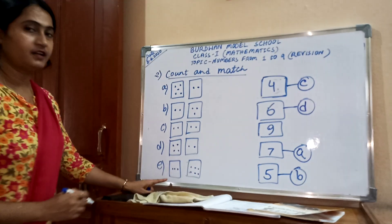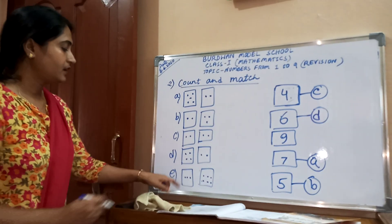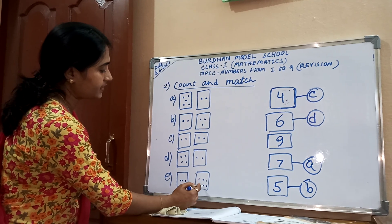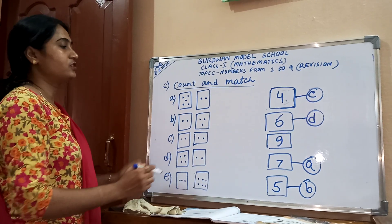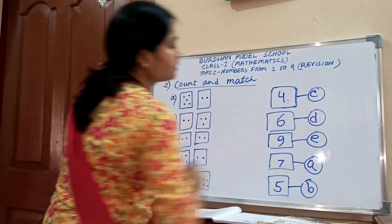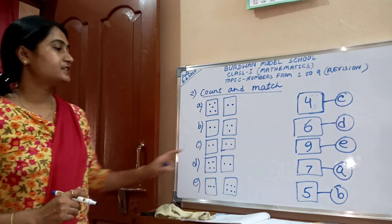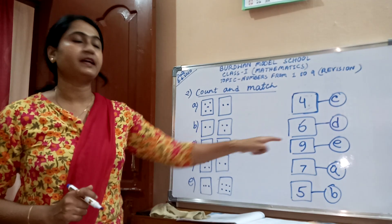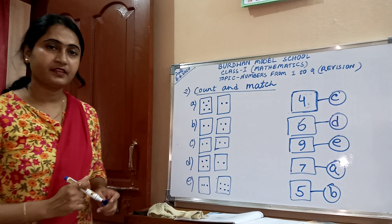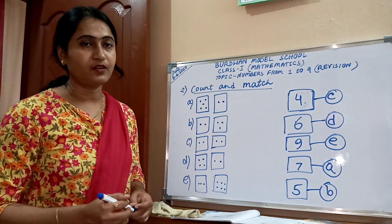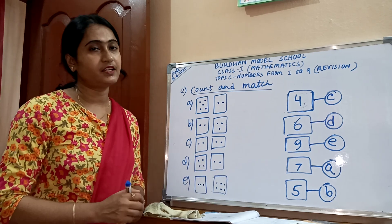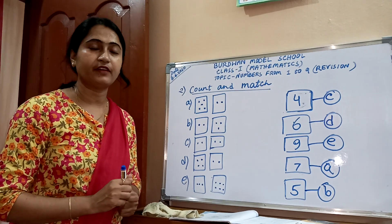Last one, number E: how many dots? One, two, three, four, five, six, seven, eight, nine — nine dots. Where is 9? Here — this is number E. This is the number matching exercise. No need to draw the line. I hope you all understand, and you will practice at home in this way.